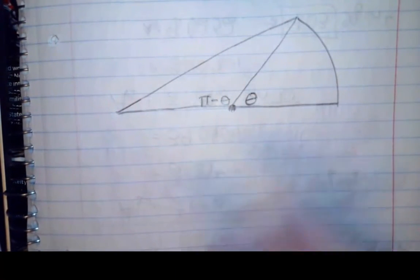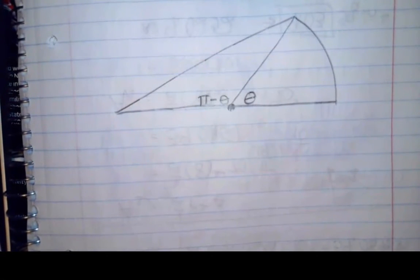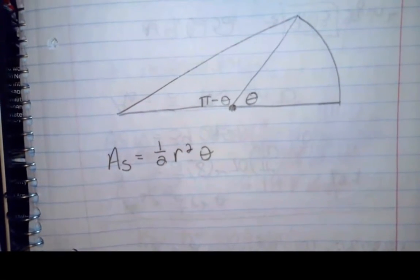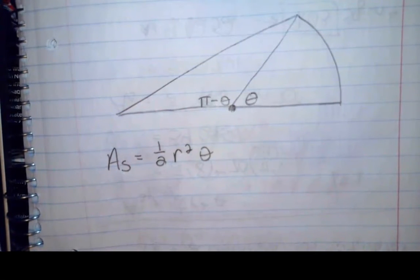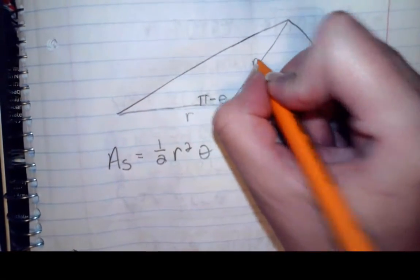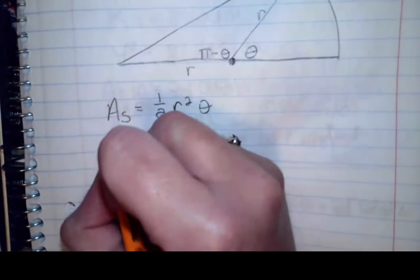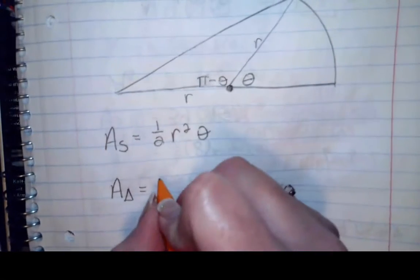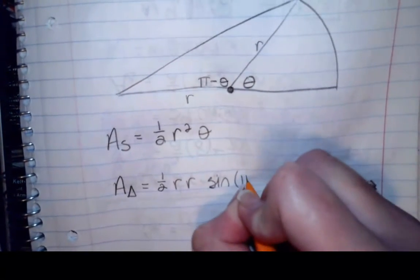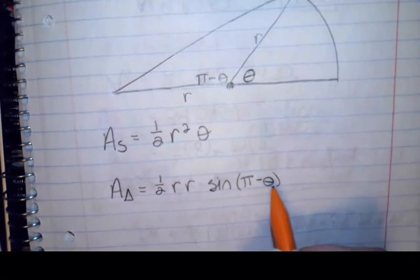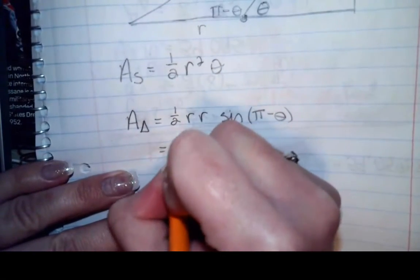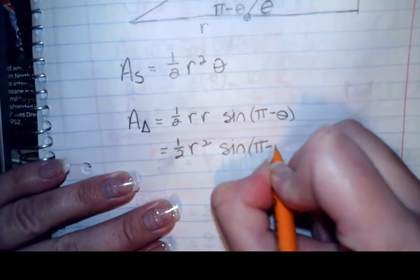Let's do the easy part first. We're going to find the sector area. The area of my sector is going to be one-half r squared theta — and that's as far as you can go, since I'm not told what r or theta are. Now I need to know what this triangle is. Both sides are still radii, so I can use one-half the product of the sides times the sine of the included angle, which is one-half r squared times the sine of pi minus theta.